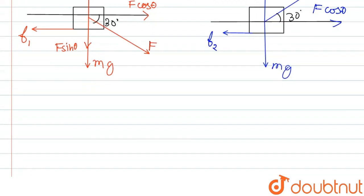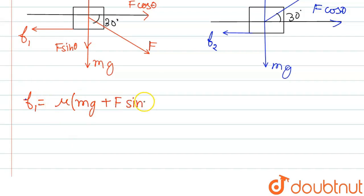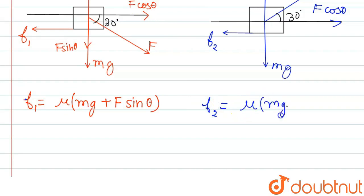Now if we write the equation for friction force, F1 will be equal to mu times (mg plus F sin theta). Here we can see that the normal force is balanced by F sin theta and mg, multiplied by the coefficient of friction. In case 2, if we write the equation for friction force, it will be mu times (mg minus F sin theta).